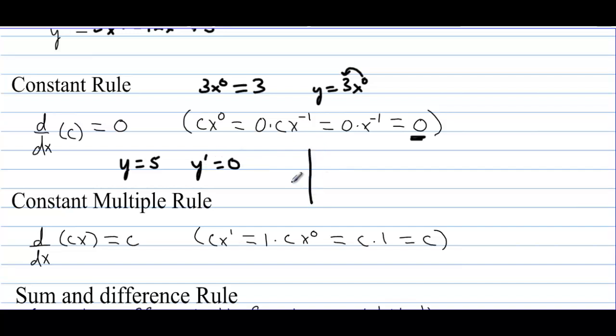Think about how we would graph this: y equals 5 is a horizontal line, and the slope of that line is 0.